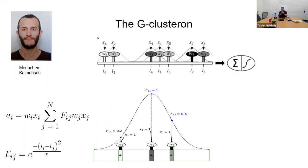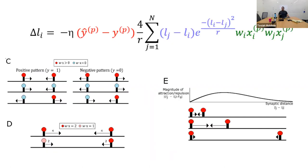Instead of having discrete synaptic locations, we give each synapse a real-valued location on the dendrite, and each synapse interacts with others in a distance-dependent manner — so W4 will interact more with W1 and less with W3, and so forth. The interaction is described by a distance-weighted product based on a bell-shaped curve. By constructing the model this way, we were able to derive a gradient descent algorithm for the Gradient Clusteron.